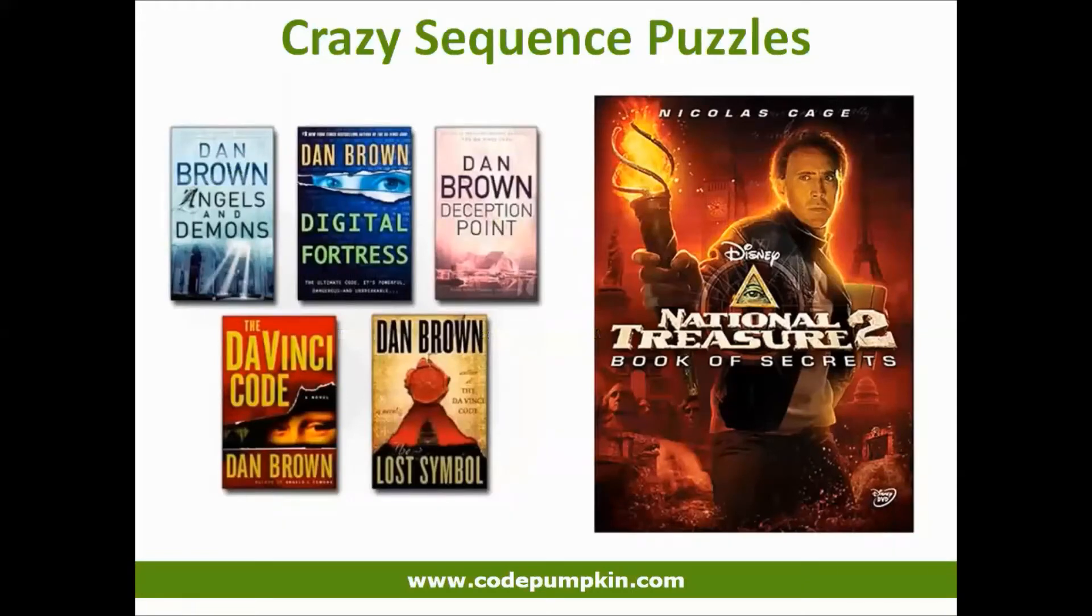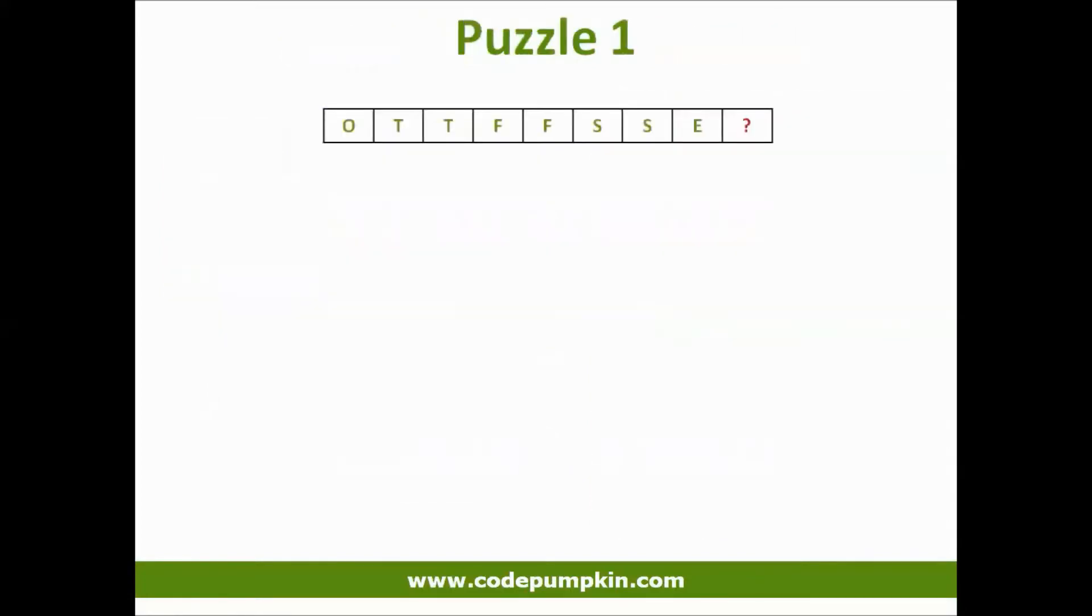If you are a fan of Dan Brown's novels, or Nicolas Cage's movie National Treasure, you gotta love these puzzles. Let's start with first puzzle. So this puzzle contains some random characters. And we need to find possible next character in this sequence.